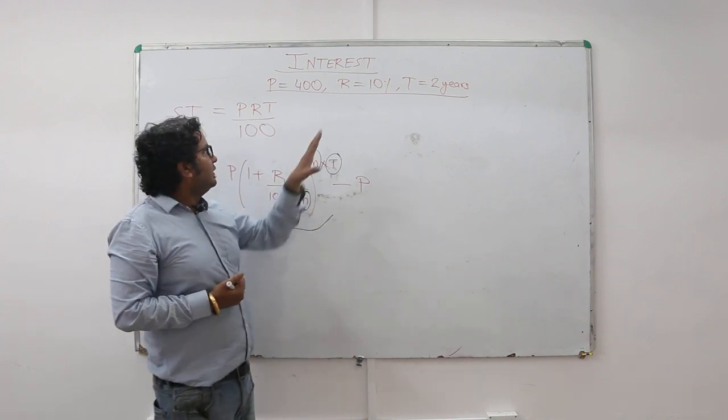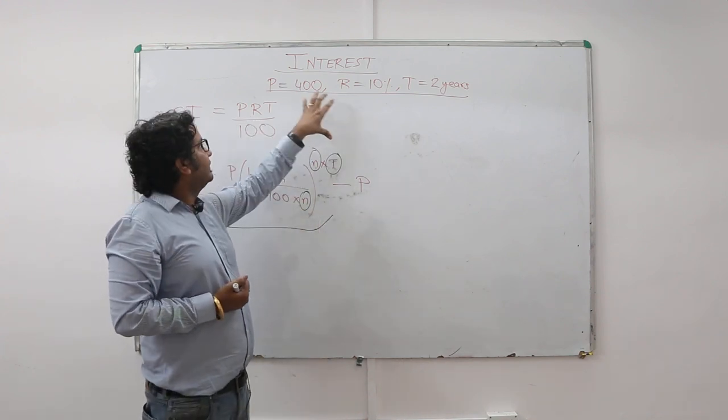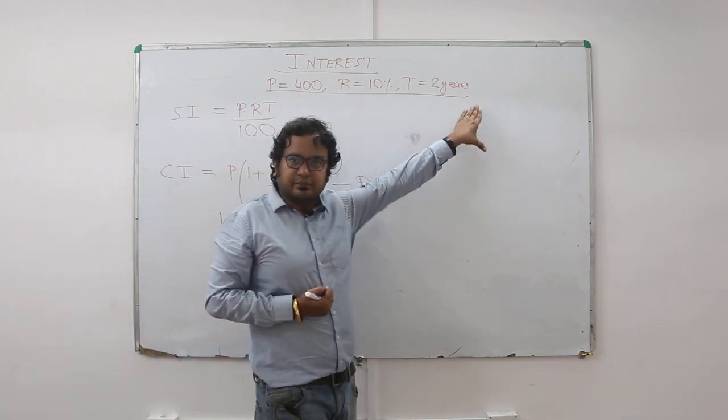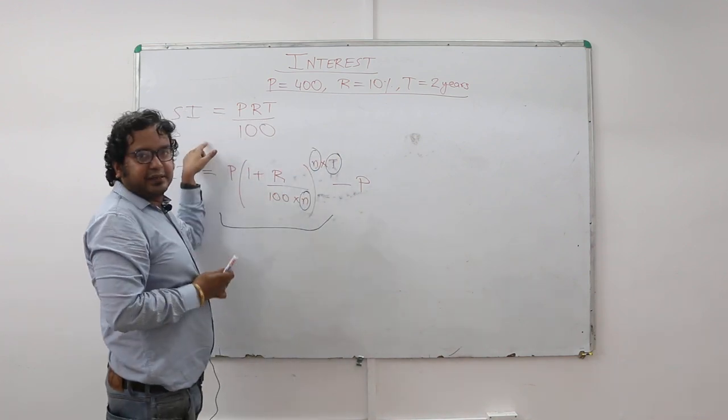So let me give an example here. Let's have a look. The first case: principal is 400, rate is 10%, and time is two years. So simple interest becomes P into R into T by 100, that is nothing but 80 rupees.